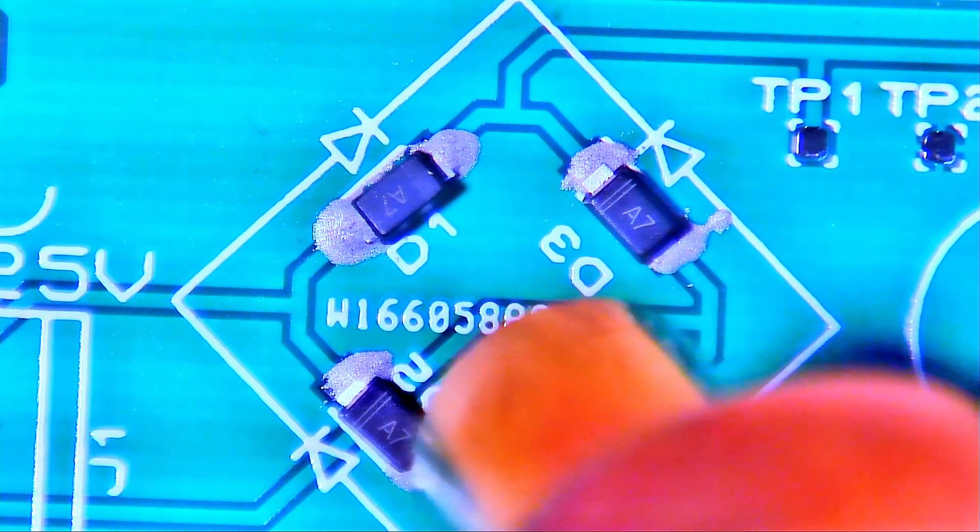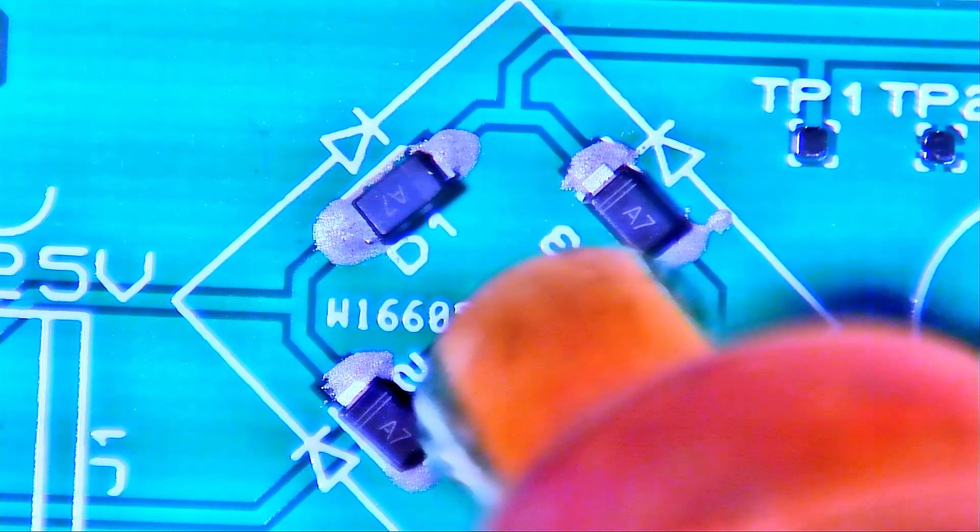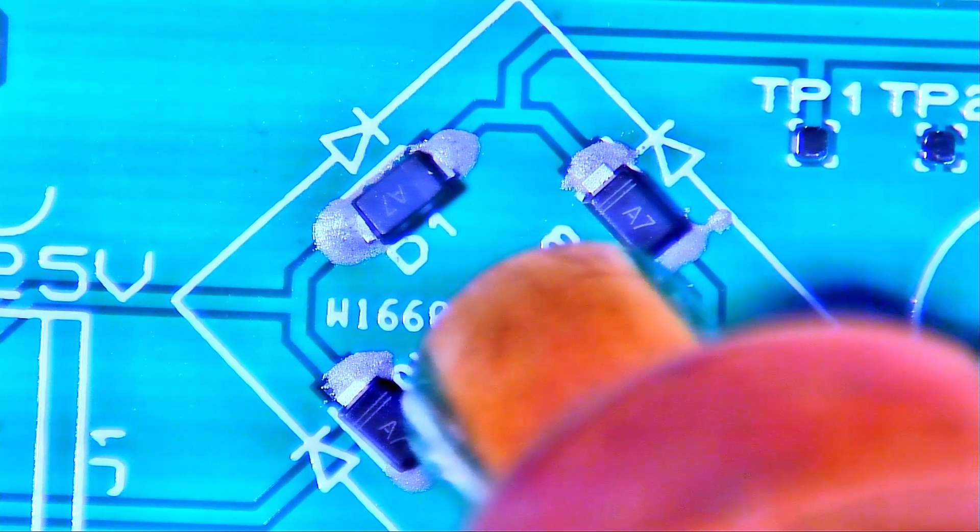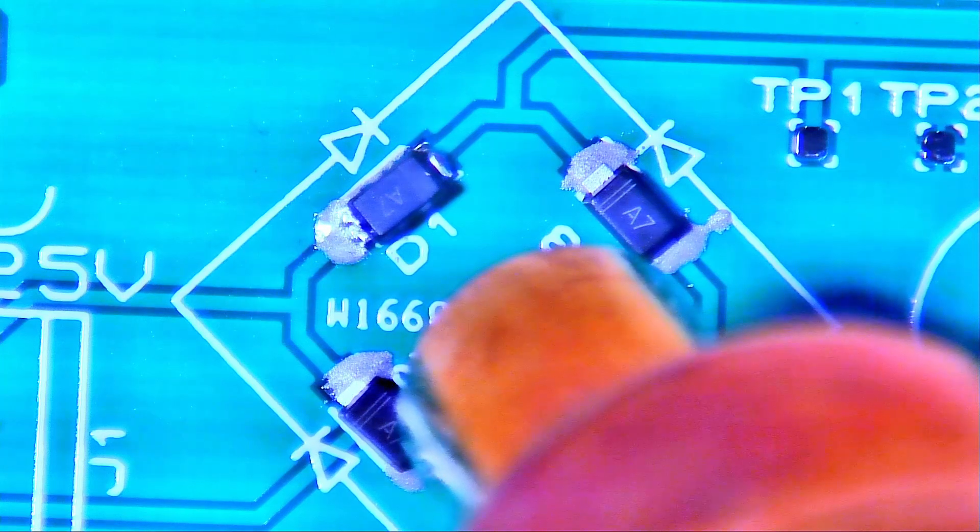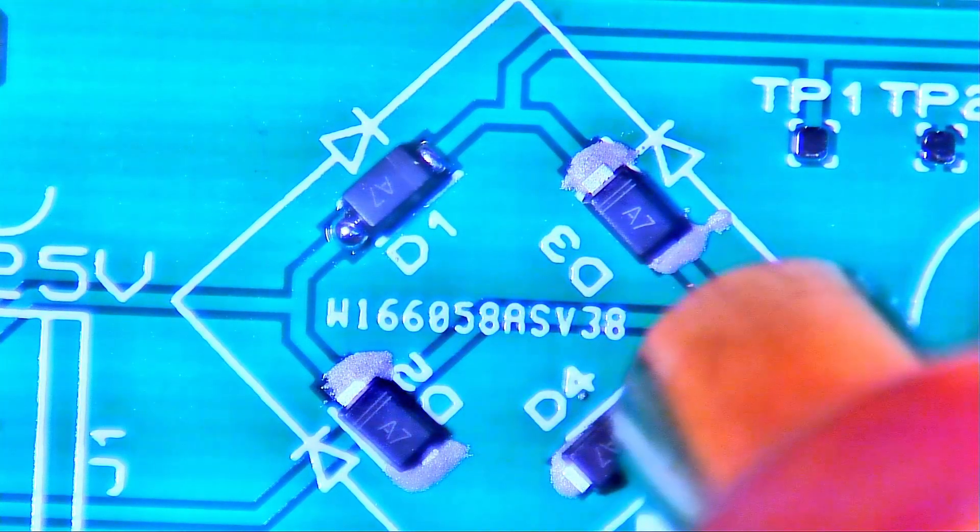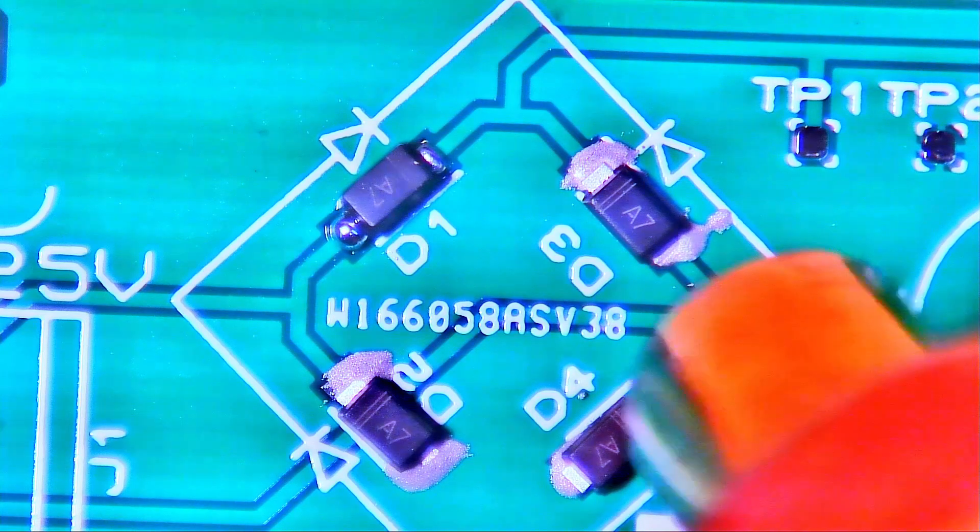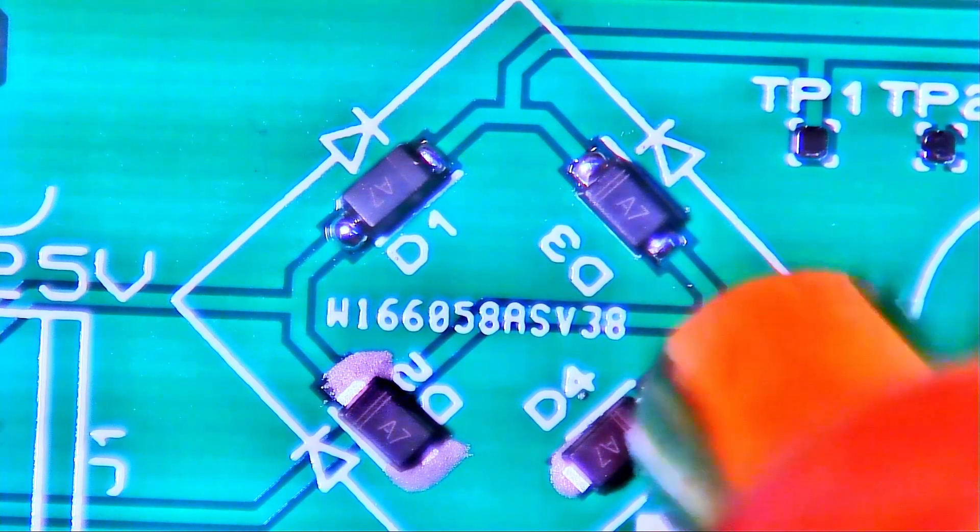We're heating it up. Notice that I do keep the soldering iron a fair distance away. It's set about 375 degrees Celsius, and the air flow is set to minimum at the largest nozzle I have.